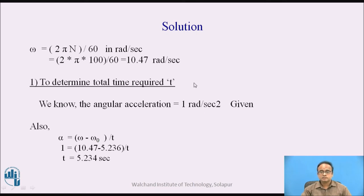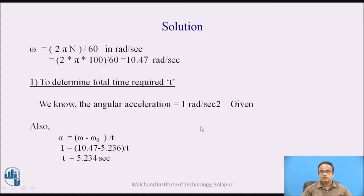We are asked to determine the total time required. We have angular acceleration available. Using alpha equals omega minus omega 0 divided by t — analogous to linear motion where a equals v minus u divided by t — we substitute alpha equals 1, omega equals 10.47 radian per second, and omega 0 equals 5.236 radian per second. Solving for t, we get t equals 5.234 seconds.